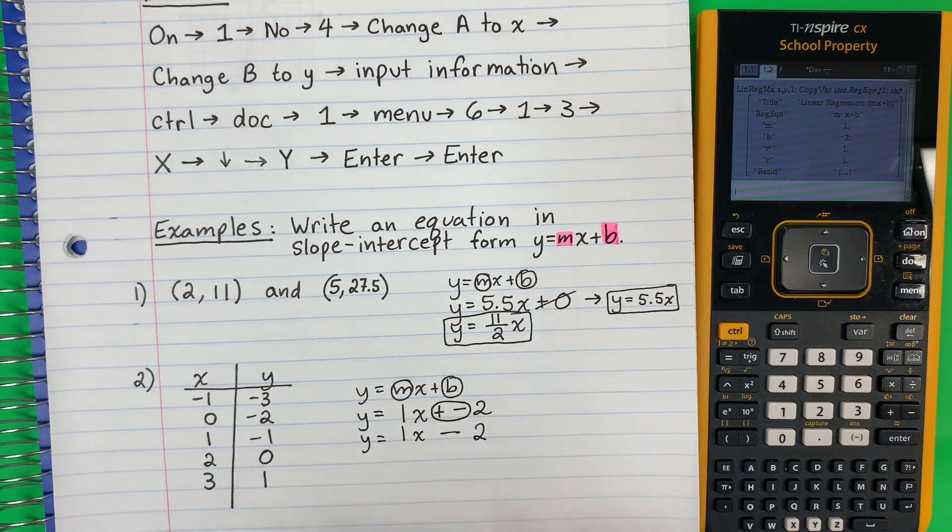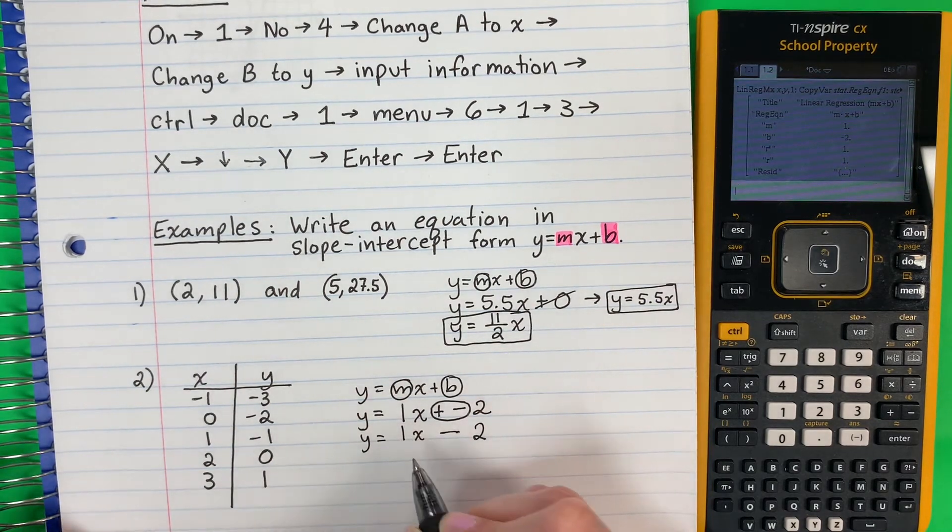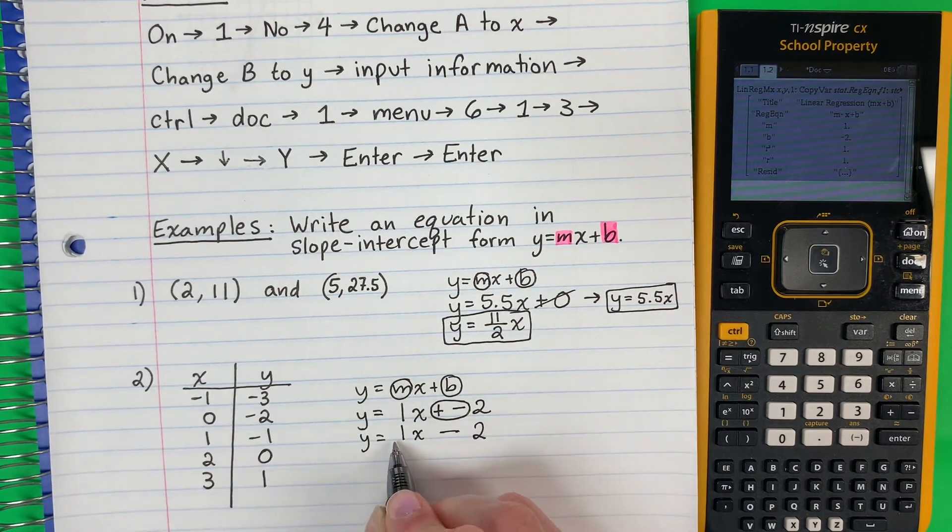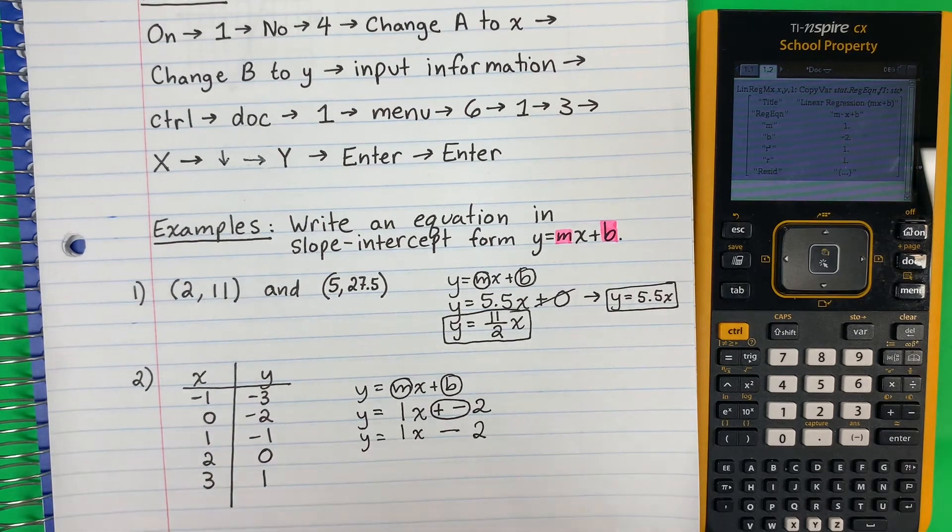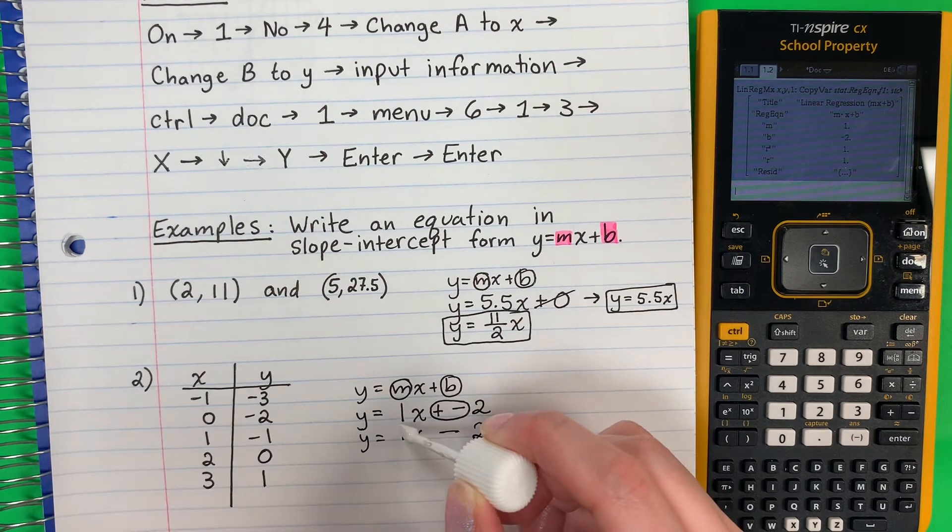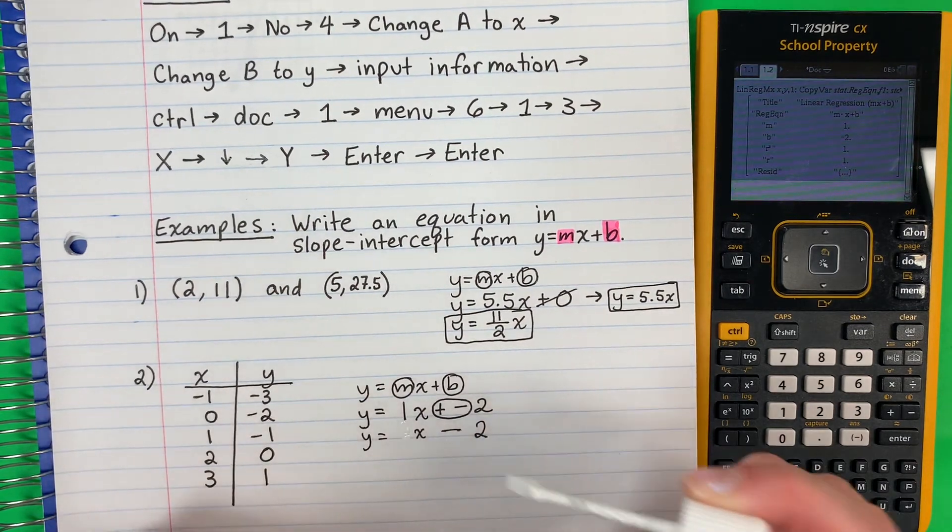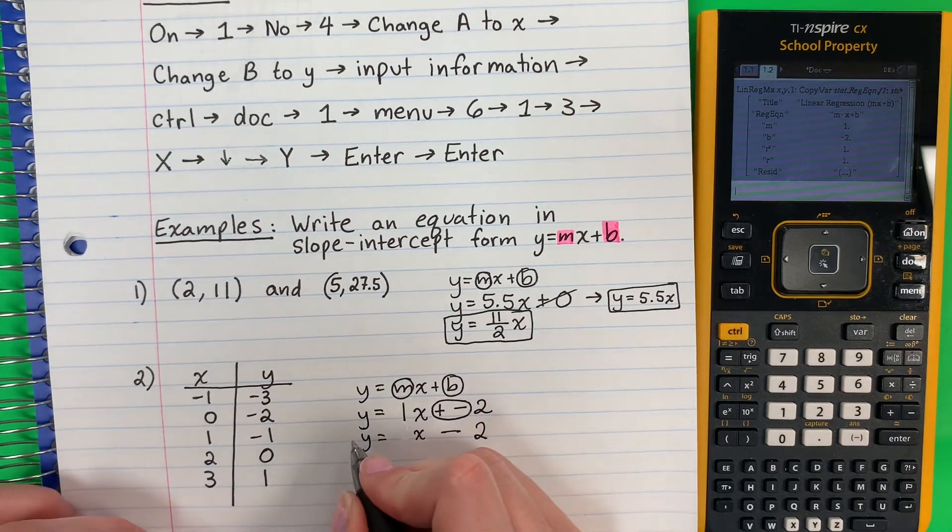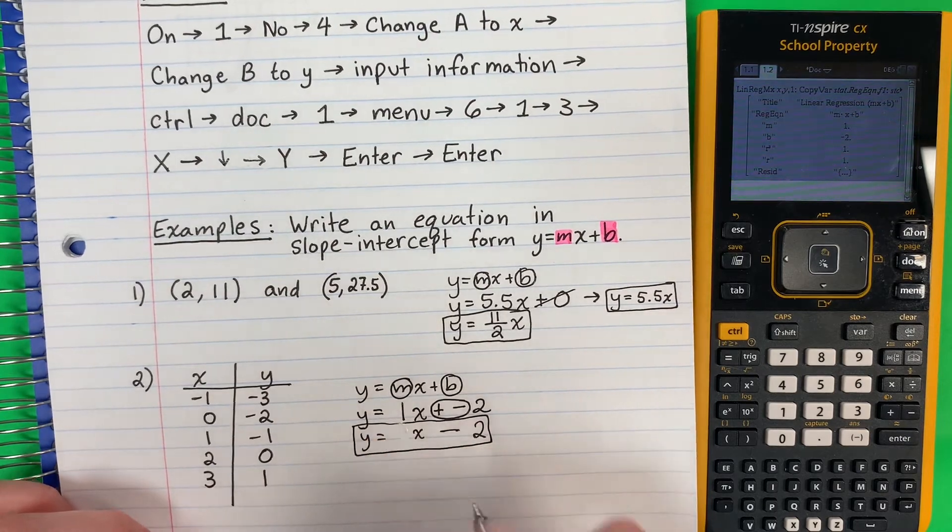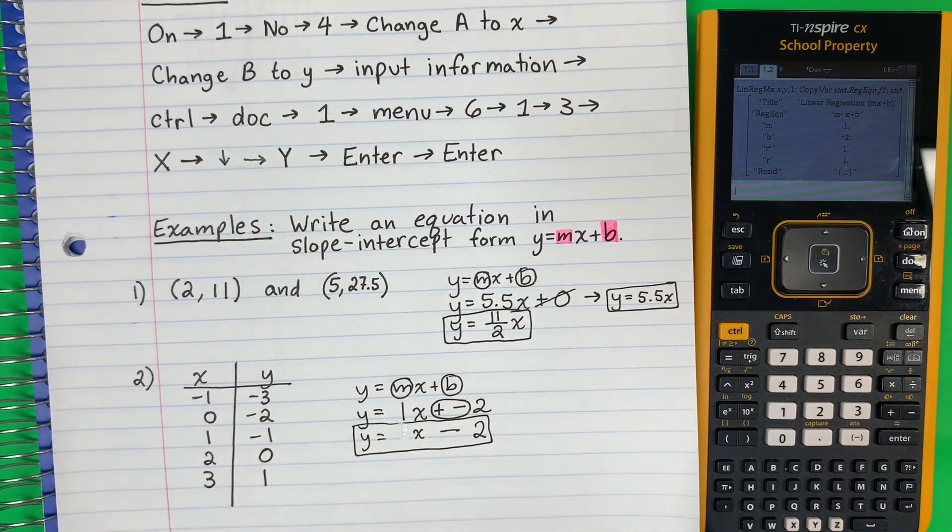So I'm going to write Y equals 1X minus 2. Another thing. Una otra cosa. One in front of the letter, I don't need it. Uno en frente de la letra, no lo necesito. So I'm going to erase the one. Voy a borrar el uno. I don't need one in front of the letter. No necesito uno en frente de la letra. It's automatic. Es automáticamente allí. So this is my answer. Y equals X minus 2.